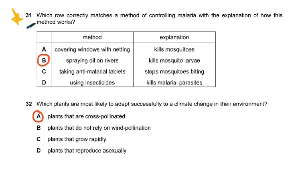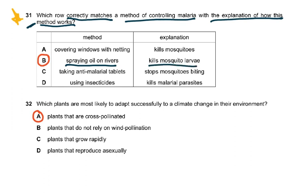Question 31 is mentioned in the mark scheme — weaker candidates thought of mosquitoes as being malarial parasites. Covering windows with netting doesn't kill mosquitoes. The correct answer is spraying oil on rivers kills mosquito larvae, because the oil prevents them from surfacing to take in air. Insecticide kills the female Anopheles mosquito, the vector, not the Plasmodium parasite inside the blood. Taking anti-malarial tablets kills the Plasmodium but doesn't stop mosquitoes from biting.